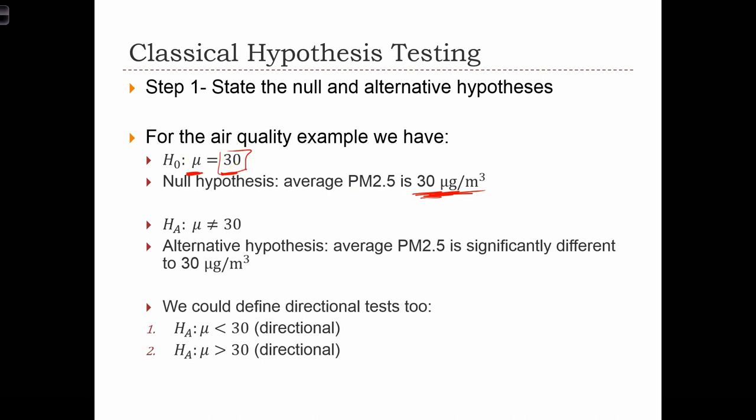The alternative hypothesis was, if we recall the question, can the scientists prove that the mean is no longer 30? So we haven't asked them to prove that it's greater than 30. We've just asked them to prove, is it different to 30? And therefore, the alternative hypothesis, the thing that they're trying to test for, is whether or not mu doesn't equal 30 anymore. So the alternative hypothesis is that average PM2.5 is significantly different to 30 micrograms per meter cubed.